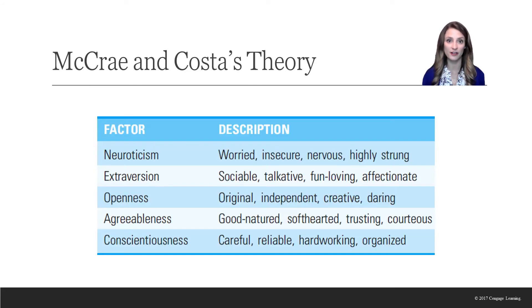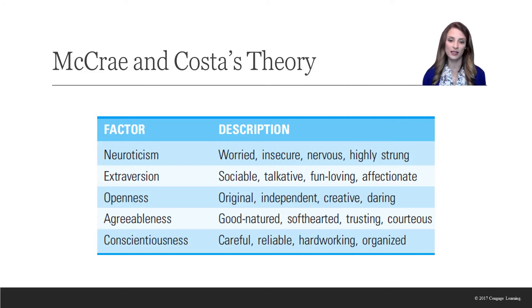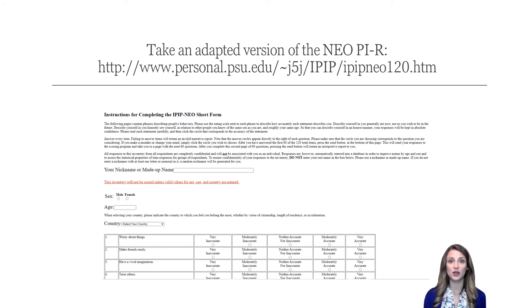Here are the five factors of their theory — remembered using the OCEAN acronym: Openness to experience, Conscientiousness, Extroversion, Agreeableness, and Neuroticism. People who score high on neuroticism tend to be insecure and worried. High scorers on extroversion tend to be talkative, fun-loving, and affectionate. High scorers on openness tend to be creative thinkers and independent, able to come up with original solutions to problems. High scorers on agreeableness tend to be good-natured, trusting of others, and courteous in social situations. Those who score high on conscientiousness tend to be hard workers, reliable, and organized. If you'd like to take an adapted version of the NEO, please go to this website.